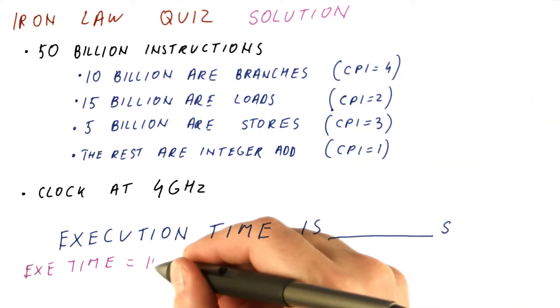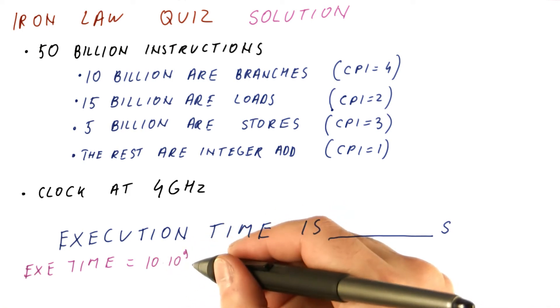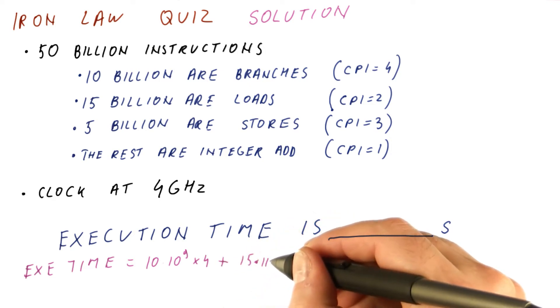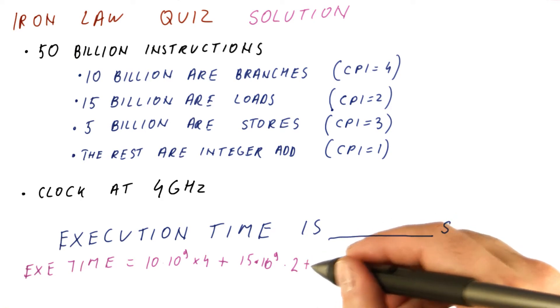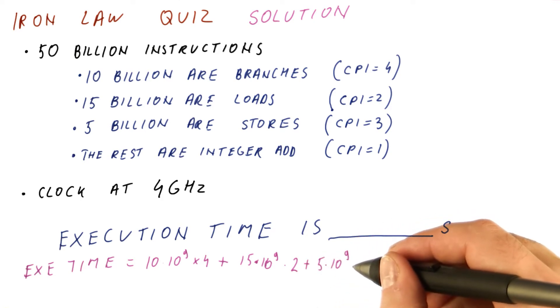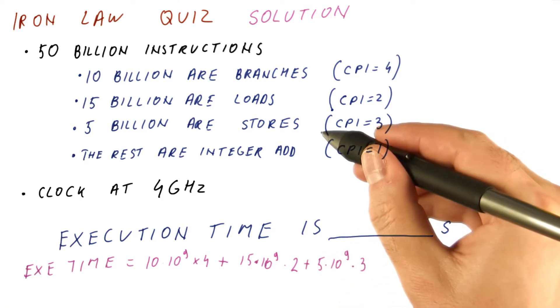In this case, it's 10 times 10 to the ninth, which is 10 billion times 4 for branches, plus 15 billion times 2 for loads, plus 5 billion times 3 for stores.